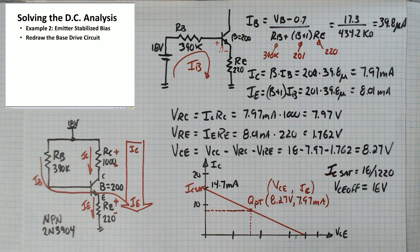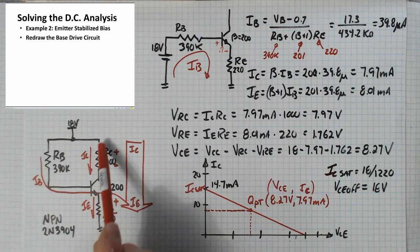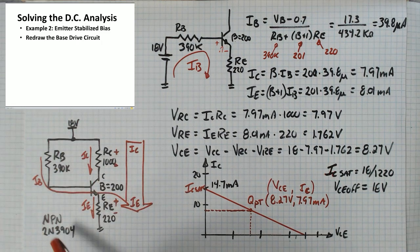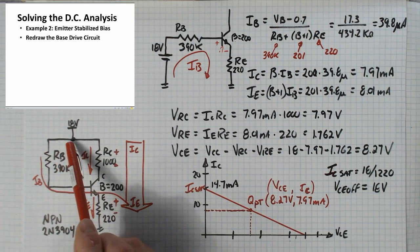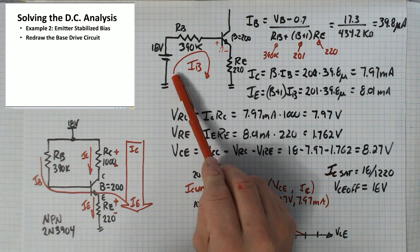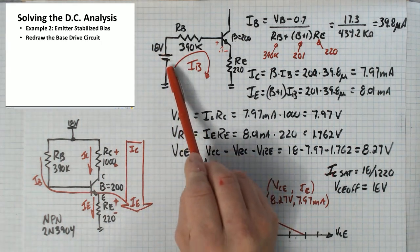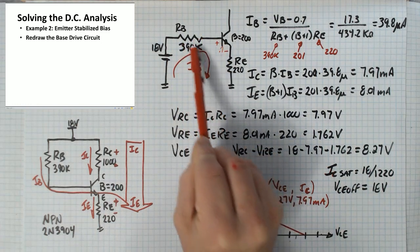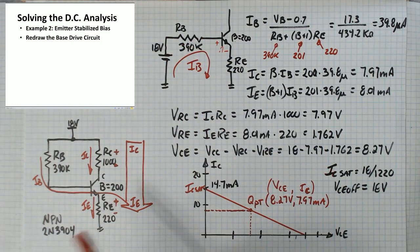First thing you do is you redraw the base drive circuit. So here we have one 18 volt source and what I've done is I've split that off into two separate 18 volt sources and then redrawn it here as this 18 volts generating base current through the 390k ohm resistor going into the base.